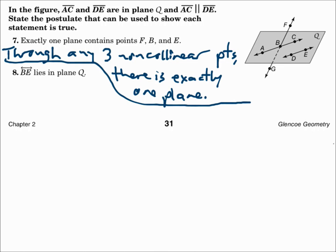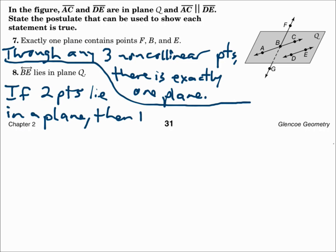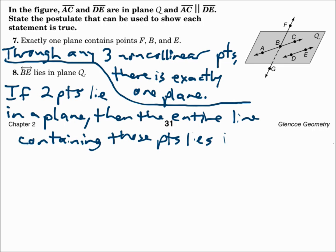Number eight: line BE lies in plane Q. Look at your postulates — which one talks about a line being in a plane? That would be: if two points lie in a plane, then the entire line containing those points lies in the plane. Since points B and E are in plane Q, then the line containing them is also in plane Q.